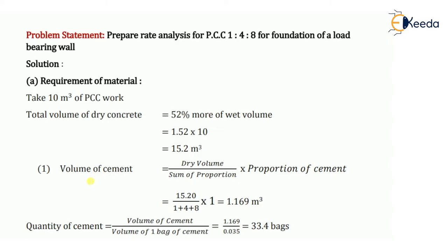The volume of cement is 1.169 cubic meters, but we bring cement to site in bags, so this must be converted to number of bags. The formula is: number of bags = volume of cement ÷ volume of one bag. The volume of one 50 kg bag of cement is always 0.035 cubic meters. So number of bags = 1.169 ÷ 0.035 = 33.4 bags. Keep this value as is — no rounding needed.